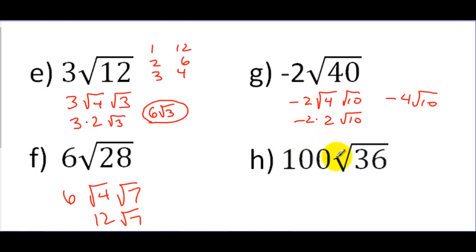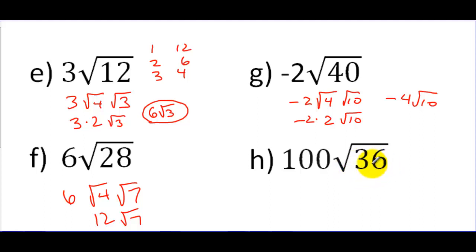And then the last one — just because I don't want you to forget what you already know — if you have something like 100 times the square root of 36, don't try to break this down. The square root of 36 you could do right now, unlike the square root of 40, 12, or 28.